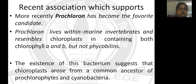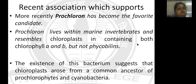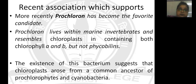The theory is supported not just by logical argument but by certain current evidences. The first example is the organism called Prochloron. Prochloron lives within a marine invertebrate and resembles chloroplasts in containing both chlorophyll A and B. It does not have phycobilin. The existence of this bacterium suggests that chloroplasts arose from a common ancestor of Prochlorophytes or cyanobacteria — a live example of an organism living within the body of another organism and serving the same photosynthetic purpose.